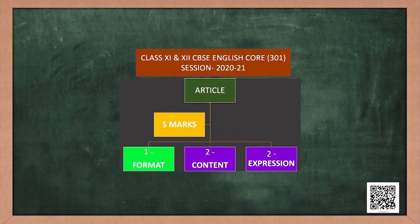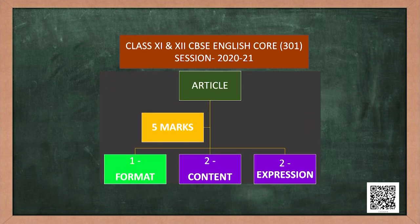But before I tell you all about it, let us look at the CBSE marks division for article writing. This year the marks are only five, and those five marks are divided into three parts: one mark is for format, two marks are for content, and two marks are for expression. Really, only five marks? I heard it used to be ten marks. Yes, its weightage has been reduced, but that does not mean it is any less important.